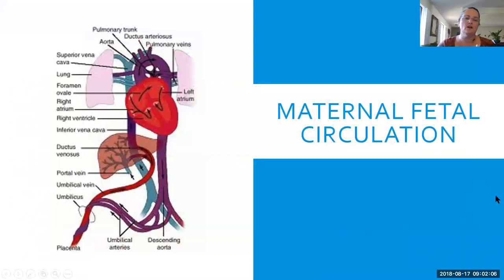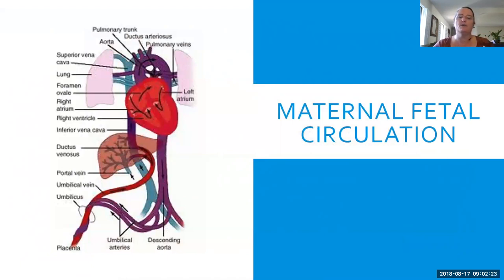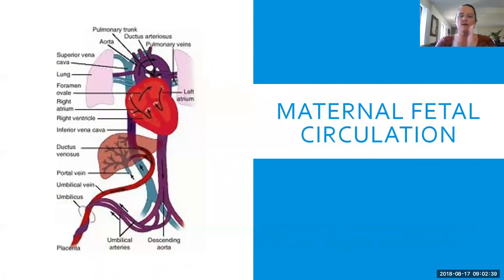Here's the maternal-fetal circulation. The blood flow in utero actually does not go to the lungs — there's no reason because the oxygen is coming from the mother. At the moment of birth, the baby takes a big deep breath and pushes all that fluid out of its lungs. There's a hole in the center of the heart that has been shunting blood away from the lungs — it's called the ductus arteriosus — and we hope it closes up all the way. That flap shuts as the baby takes its first breath and air is now circulating through the lungs. It's kind of a miracle every time it happens and goes well.